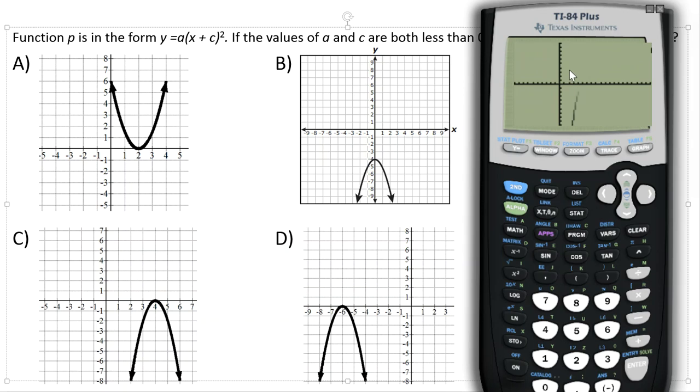Press graph and oops, my window is still way messed up. It's still way off to the right. If you want to go back to a standard window, you just hit zoom, the zoom button, hit 6. It takes us back to a standard window and here's what the graph should look like. It should be a parabola pointing down, and it should be to the right of the origin. So it needs to be to the right of the origin and pointing down.